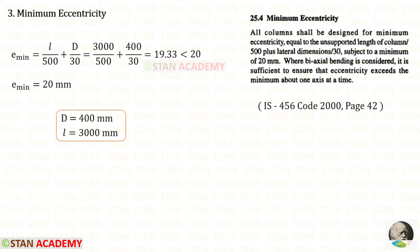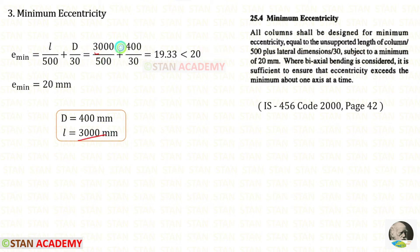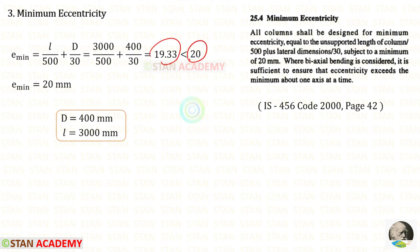Now we find the minimum eccentricity. Opening the code book page 42: all columns shall be designed for minimum eccentricity equal to the unsupported length divided by 500, plus lateral dimension divided by 30, subject to a minimum of 20 millimeter. The unsupported length is 3000 and the lateral dimension is the diameter D = 400. Calculating: 3000/500 + 400/30 = 6 + 13.33 = 19.33, which is less than 20. So the minimum eccentricity is 20 millimeter.